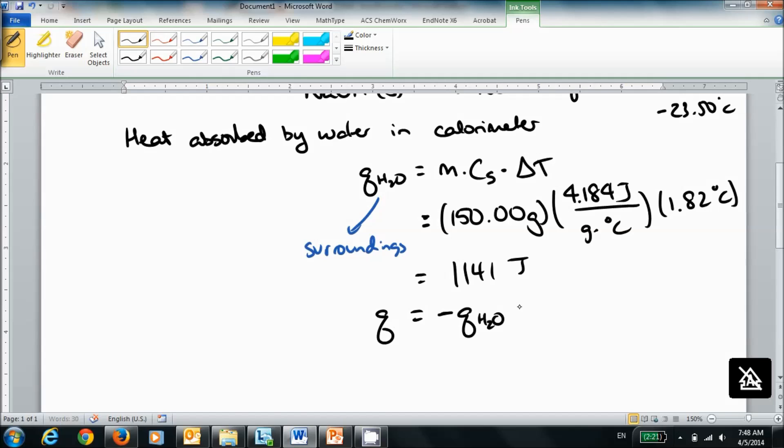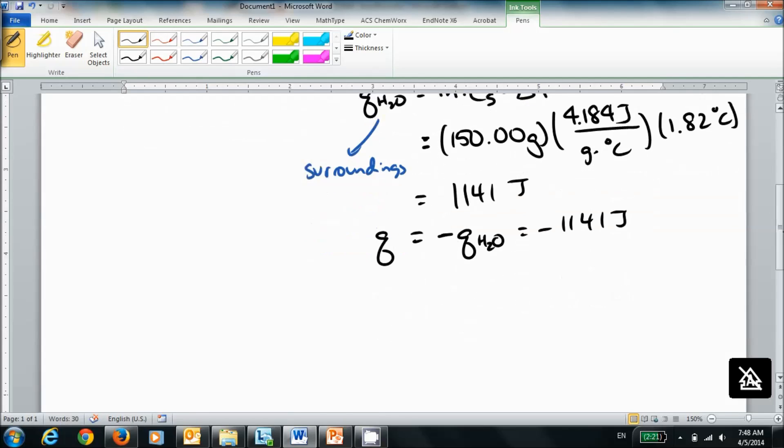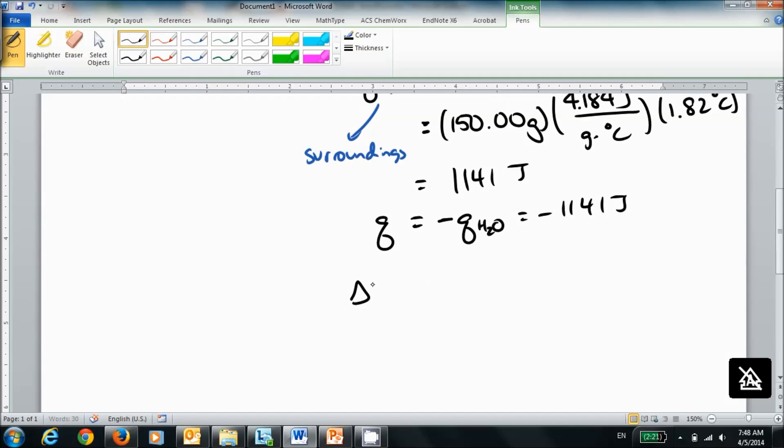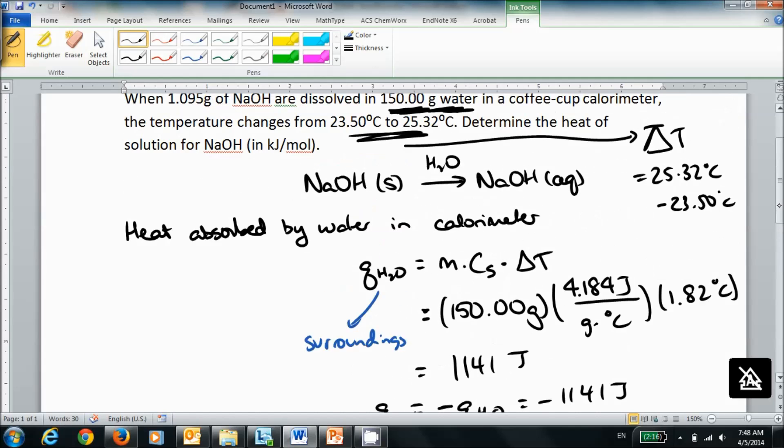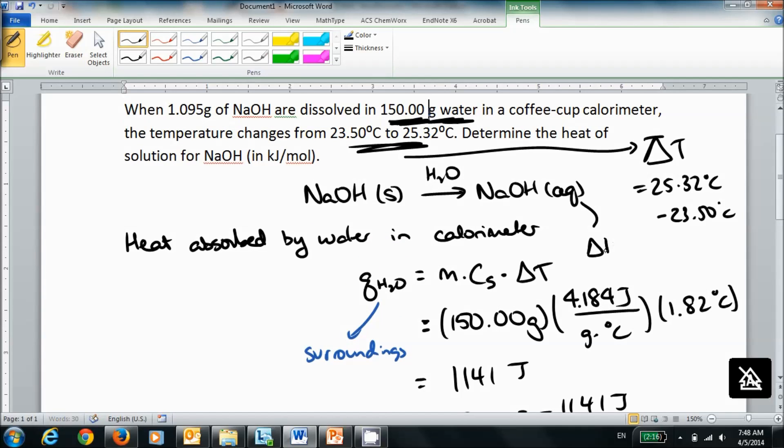That's minus 1141 joules. And so delta H, as you may know, is the heat expressed in the heat of a reaction, or the heat of solution. So what we're trying to find now is delta H of this process.